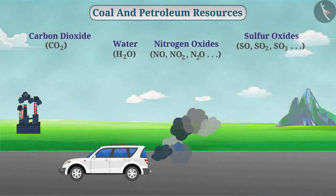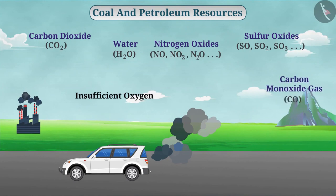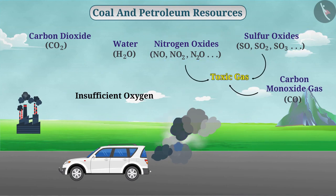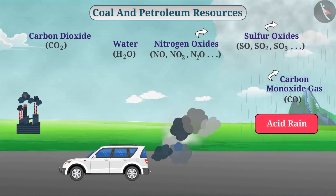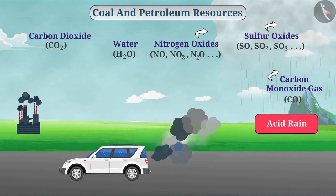At the time of burning these fuels, if the amount of oxygen is insufficient, carbon monoxide gas is produced, which is a toxic gas. Similarly, nitrogen and sulfur oxides are also toxic gases. In the upper atmosphere, when these gases mix with rain, it causes acid rain. For all these reasons, we must use coal and petroleum resources wisely.